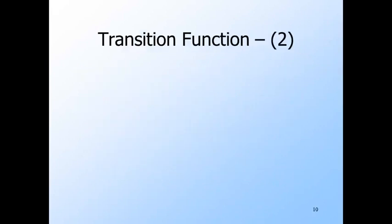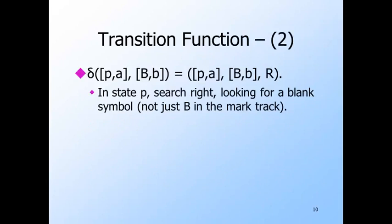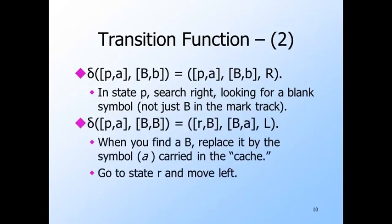There are two families of rules for control state P. If the current tape symbol does not have a blank in the data track, then stay in the same state, leave the tape symbol as it is, and move right. A and b can represent either 0 or 1 independently, so there are really four rules represented here. When the blank symbol BB is reached, place the symbol A that is in the cache in the data track of the current square — the cached symbol winds up in the data track — then go to control state R and move to the left.